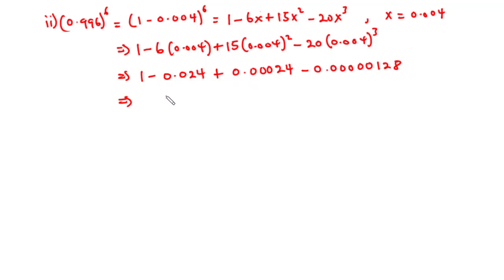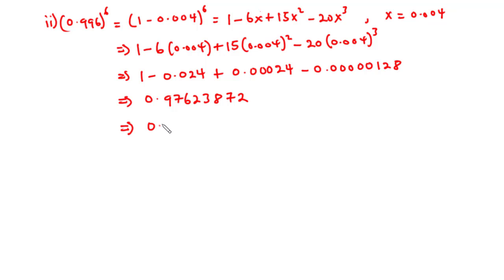Combining all terms gives approximately 0.976238. Rounding to two decimal places, the approximate value of 0.996^6 is 0.98.